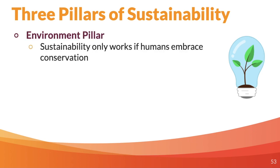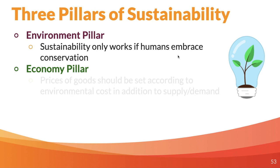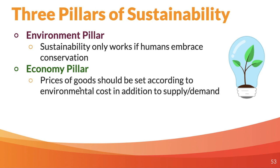There are three pillars of sustainability. One is the environment pillar — sustainability only works if humans embrace conservation and the idea that the environment is important. Two is the economy pillar — prices of goods should be set according to environmental cost in addition to supply and demand. In the United States we only use supply and demand — the free market, capitalism. This pillar argues that if a car is particularly fuel-inefficient and really bad for the environment, the price of that car should be very high even if there's low demand and high supply, because it has a high environmental cost.